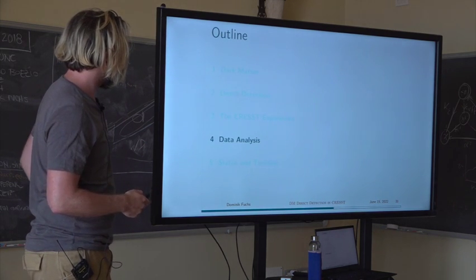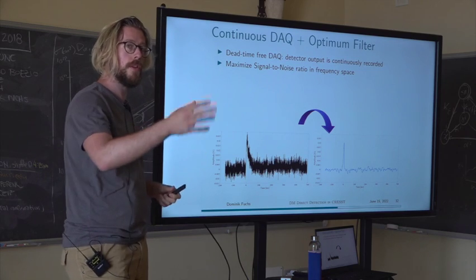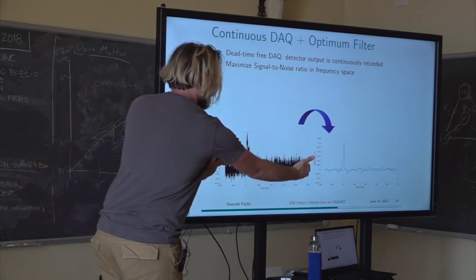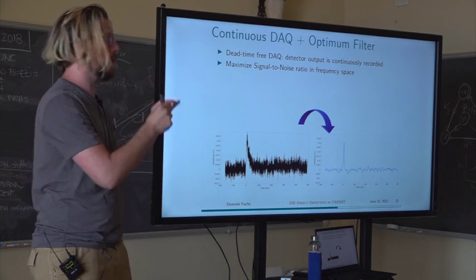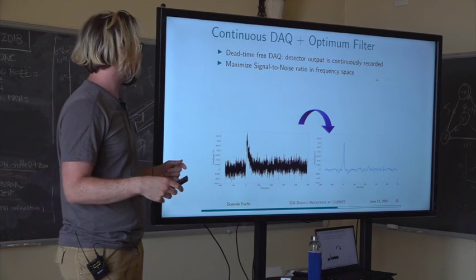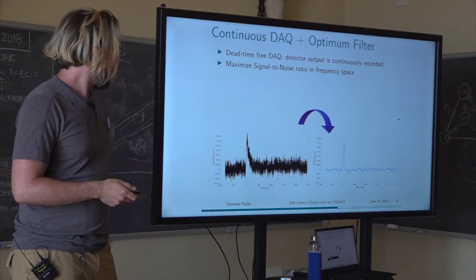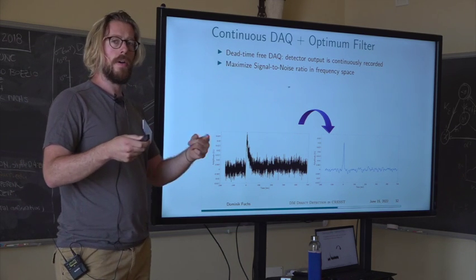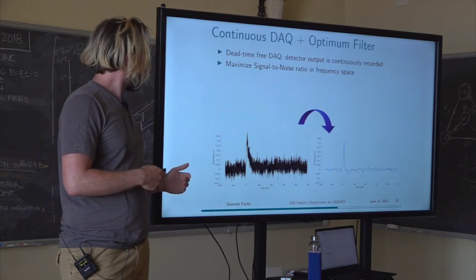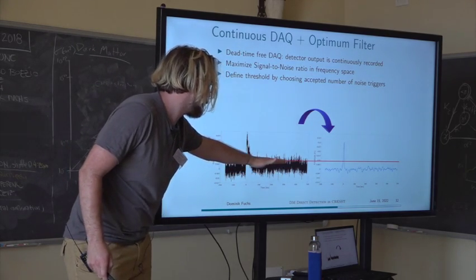Coming to the data analysis: since CRESST 3 we use a dead-time-free DAQ. Before that we set a hardware threshold and saved record windows above it. Now since 2016 we record the entire data stream for every detector, then process it by running an optimum filter that maximizes signal-to-noise, followed by a software trigger. We define our threshold by accepting a certain number of noise triggers per kilogram-day, which allows us to go much lower in energy compared to a hardware threshold.